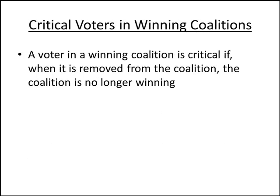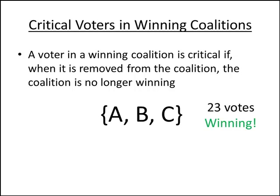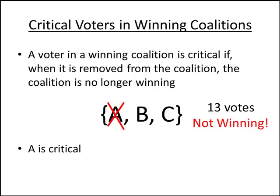We're interested in understanding when a voter is critical in a winning coalition. A voter in a winning coalition is critical if, when it is removed from the coalition, the coalition becomes no longer winning. Consider this winning coalition with 23 votes. If we remove voter A, we only have 13 votes and it suddenly becomes not a winning coalition. That means A is a critical voter — this coalition needs A in order to stay a winning coalition.